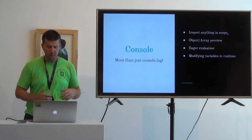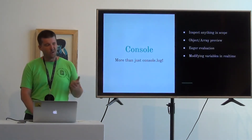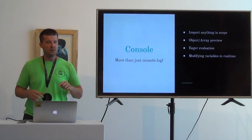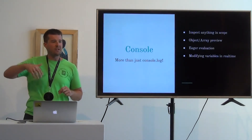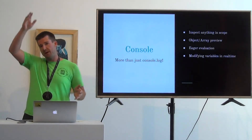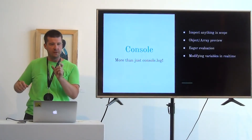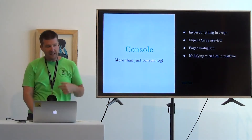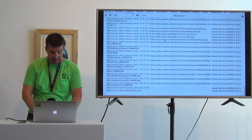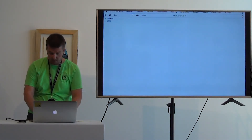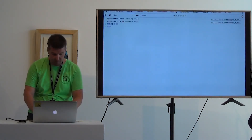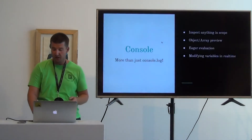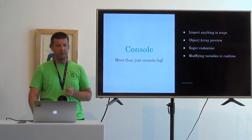In the console: inspecting anything in scope with more real estate, auto-complete for in-scope variables, object and array previews with top-level item summaries, eager evaluation for any expression no matter how complex, and modifying variables in real time. DevTools is a massive project with an entire Google team dedicated to it — it's nearly endless in what it can do.